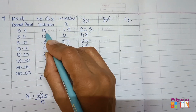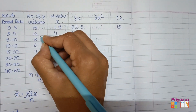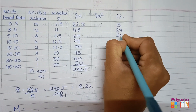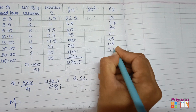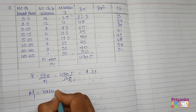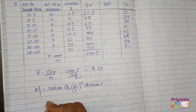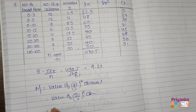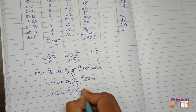To find the median we need cumulative frequency. We add frequencies: 15, 15+12=27, 27+8=35, and so on to get the full cumulative frequency column. For a continuous frequency distribution we find n/2: 51 divided by 2 gives 25.5.